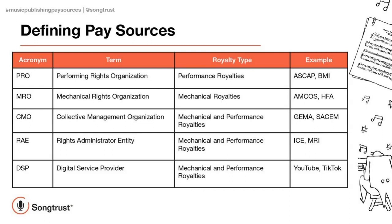Also, publishers could sometimes get royalties directly from DSPs. Some publishers have direct deals with the DSPs so that the royalties don't get paid to a PRO or an MRO and then get passed on to them — but instead, what the DSP does is pay the publisher directly.